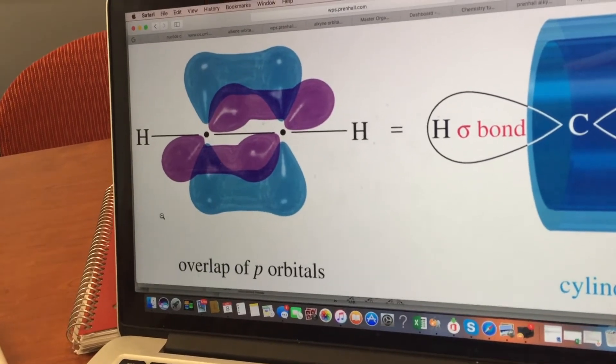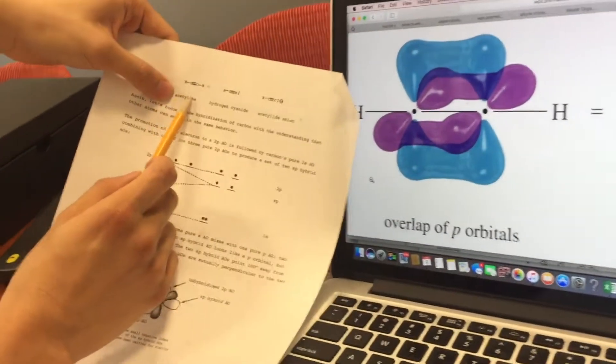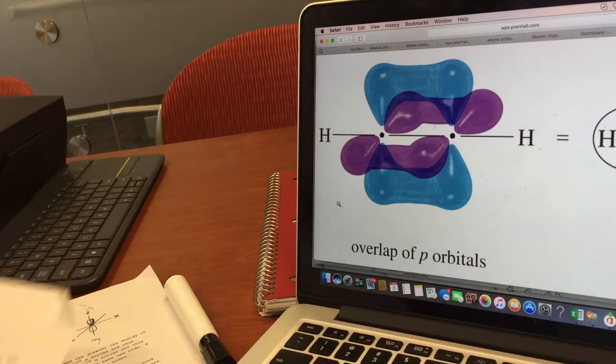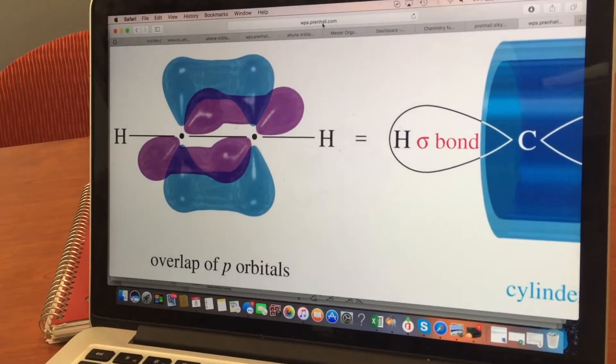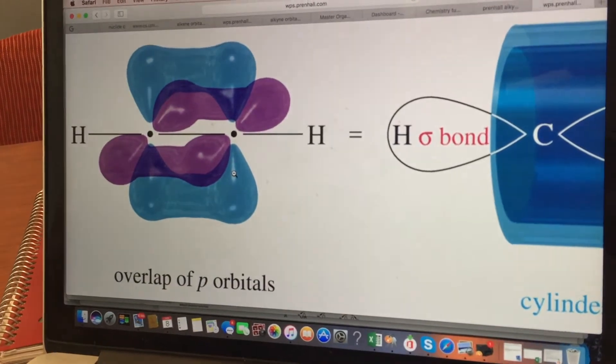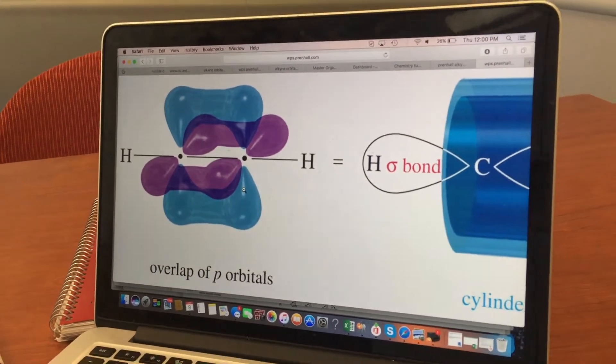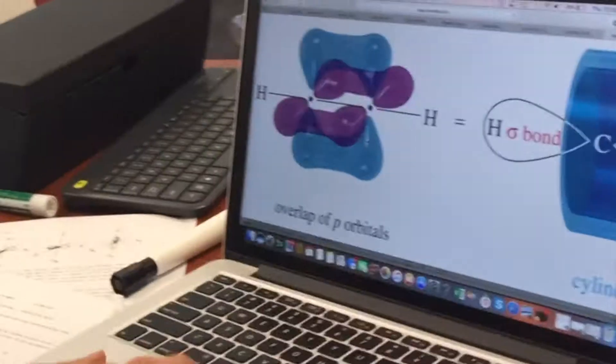This is what a triple bond or acetylene molecule actually looks like. Voila. And by the way, I take no credit for this. This is wps.prenhall.com. I think they're Prentice Hall. They created this. They deserve all the credit. So, here, I'll bring this a little closer.